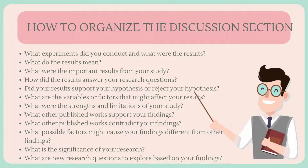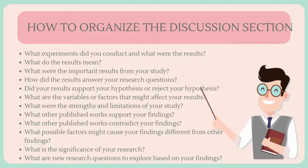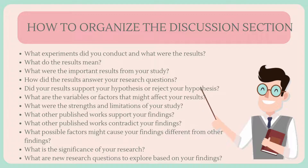This is a list of questions to guide you when organizing the structure of your discussion section: What experiments did you conduct and what were the results? What do the results mean, and what were the important results from your study? How did the results answer your research questions? Did your results support or reject your hypothesis? What are the variables or factors that might affect your results? What are the strengths and limitations of your study? What other published works support or contradict your findings? What possible factors might cause your findings to differ from other findings? What is the significance of your research? And what are new research questions to explore based on your findings?